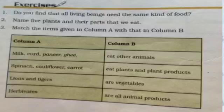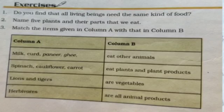Question 3: Match the items in column A with column B. Milk, curd, paneer, and ghee are all animal products. Spinach, cauliflower, and carrot are vegetables. Lion and tiger eat other animals. Herbivores eat plants and plant products.